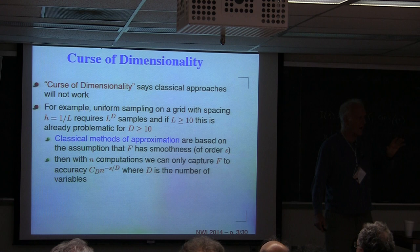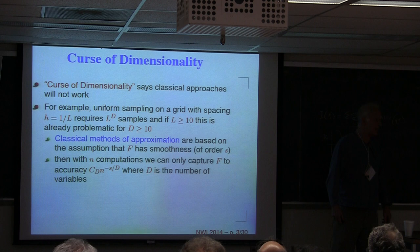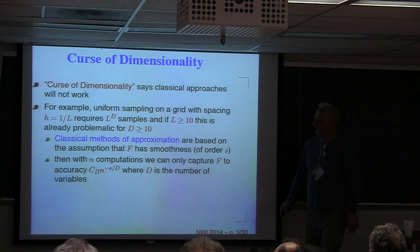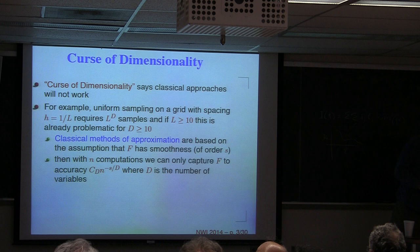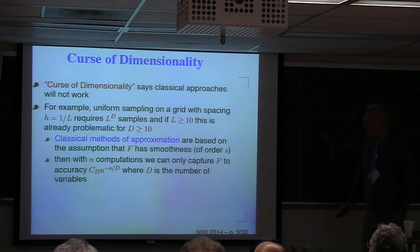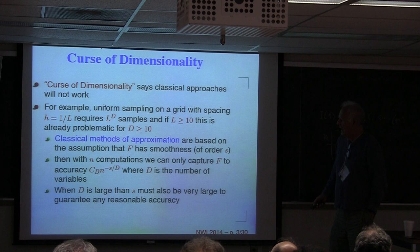What the curse of dimensionality says is that if you use n computations and all you know about your function F is that it's smooth — say it has s derivatives — then the best accuracy you're going to get in recovering the function is n^(−s/D). When D is very large, you'll have very poor resolution of your underlying function. The curse is that D appears in the denominator, and when D is infinite you can't do anything.